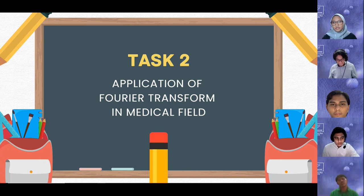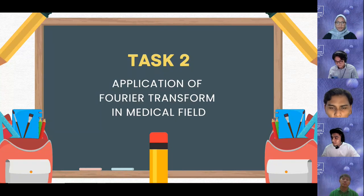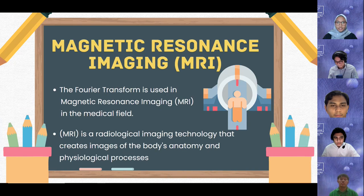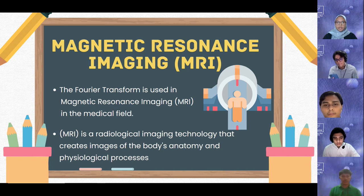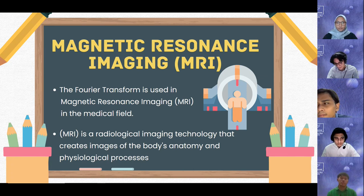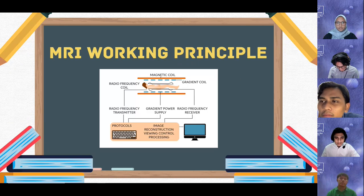My name is Norfasha Adina and I will continue the presentation with Task 2: application in the medical field. We have chosen Magnetic Resonance Imaging (MRI) as our example. Fourier transform is used in the MRI process. MRI is a radiological imaging technology that creates images of the body's anatomy and physiological processes. Strong magnetic fields, magnetic field gradients, and radio waves are used in MRI scanners to create images of the body's organs. The signal received is a complex periodic signal made of a large number of constituent frequencies.